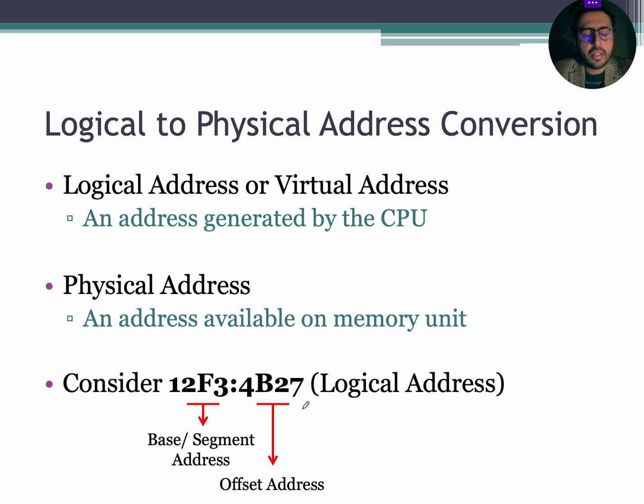Let's consider the given address which is 12F3 colon 4B27. You need to remember this: wherever you see a colon within an address, it represents logical address, and wherever you find 0x before the start of any address, it represents physical address. So, let's consider 12F3 colon 4B27.